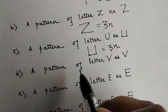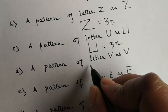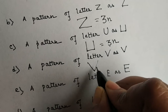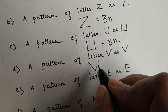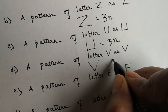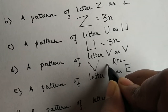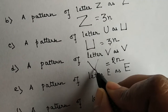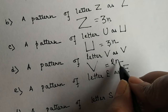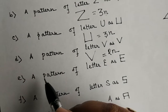Next, a pattern of the letter V. Here we have seen that 2 mastics are used to form this alphabet. So the rule will be 2 into n, where 2 is the number of mastics in one alphabet and n is the number of V's we have.